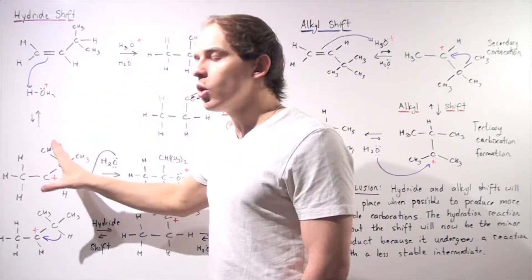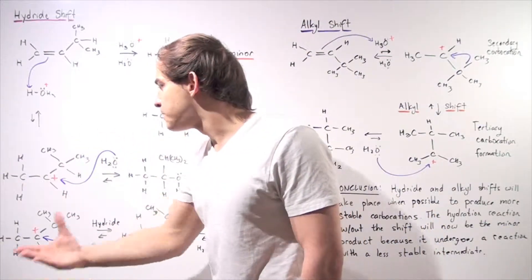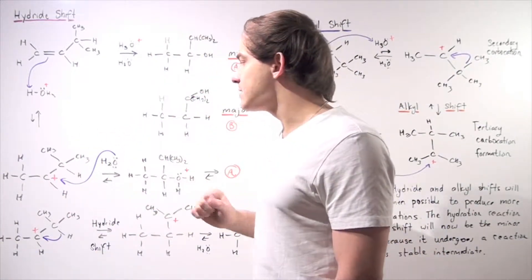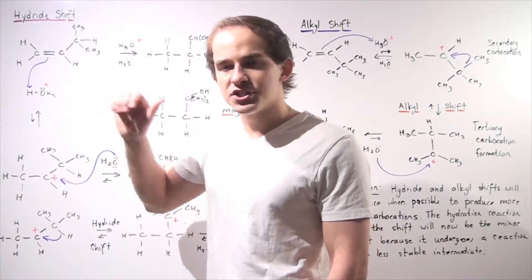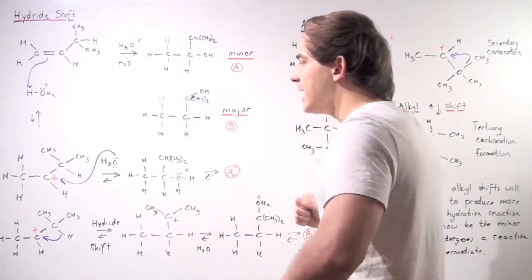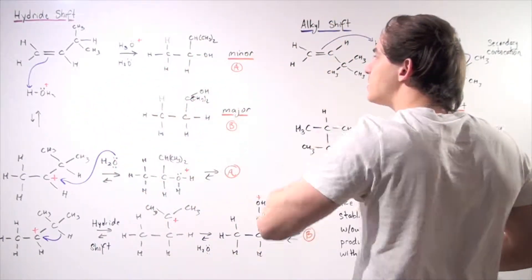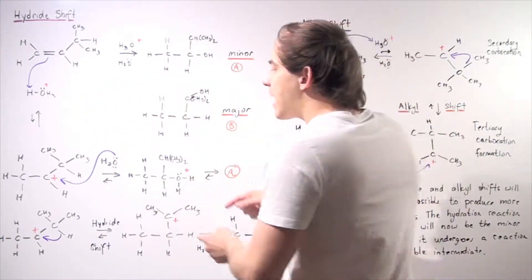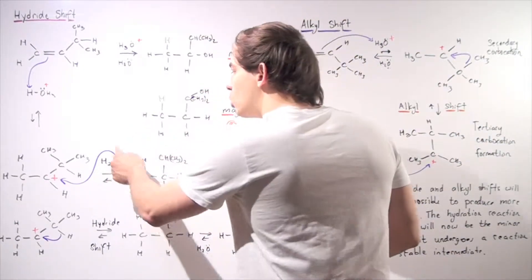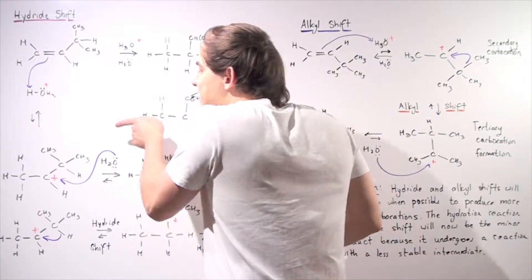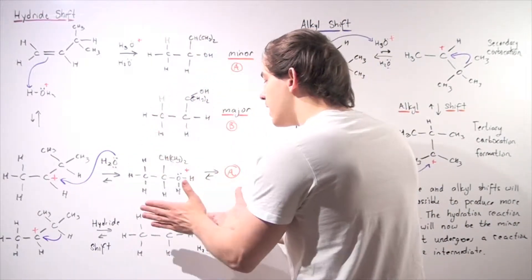The H atom goes onto this carbon because that produces the more stable secondary carbocation, versus the primary carbocation if H goes on the other side. We always want to form the more stable carbocation because that stabilizes both the intermediate and the transition state. In the second step leading to the minor Product A, water acts as a nucleophile — a lone pair of electrons adds to the carbocation, producing the following oxonium ion.